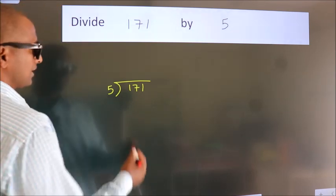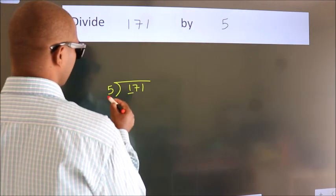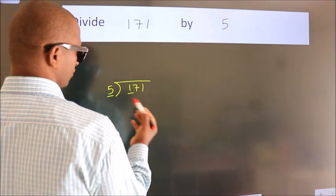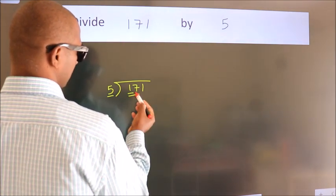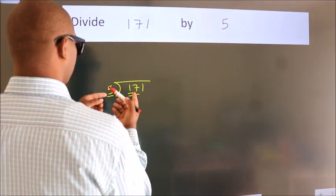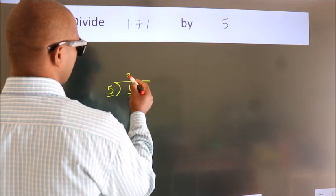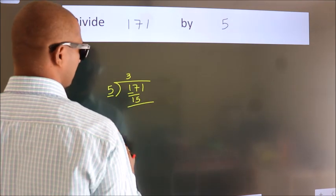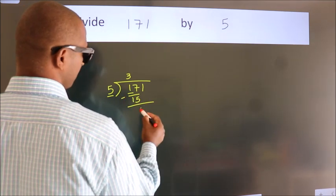Next, here we have 1, here 5. 1 is smaller than 5, so we should take two numbers: 17. A number close to 17 in the 5 times table is 5 times 3, which is 15. Now we should subtract. We get 2.